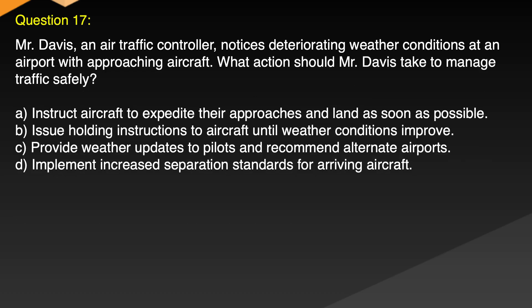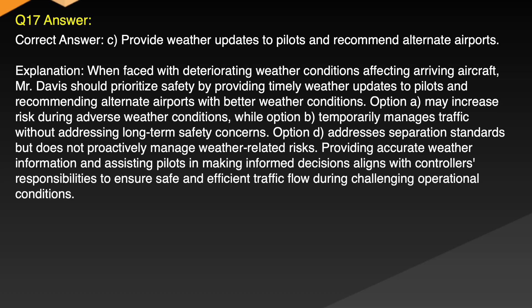Question 17. Mr. Davis, an air traffic controller, notices deteriorating weather conditions at an airport with approaching aircraft. What action should Mr. Davis take to manage traffic safely? A. Instruct aircraft to expedite their approaches and land as soon as possible. B. Issue holding instructions to aircraft until weather conditions improve. C. Provide weather updates to pilots and recommend alternate airports. D. Implement increased separation standards for arriving aircraft. Correct answer: C. Provide weather updates to pilots and recommend alternate airports.